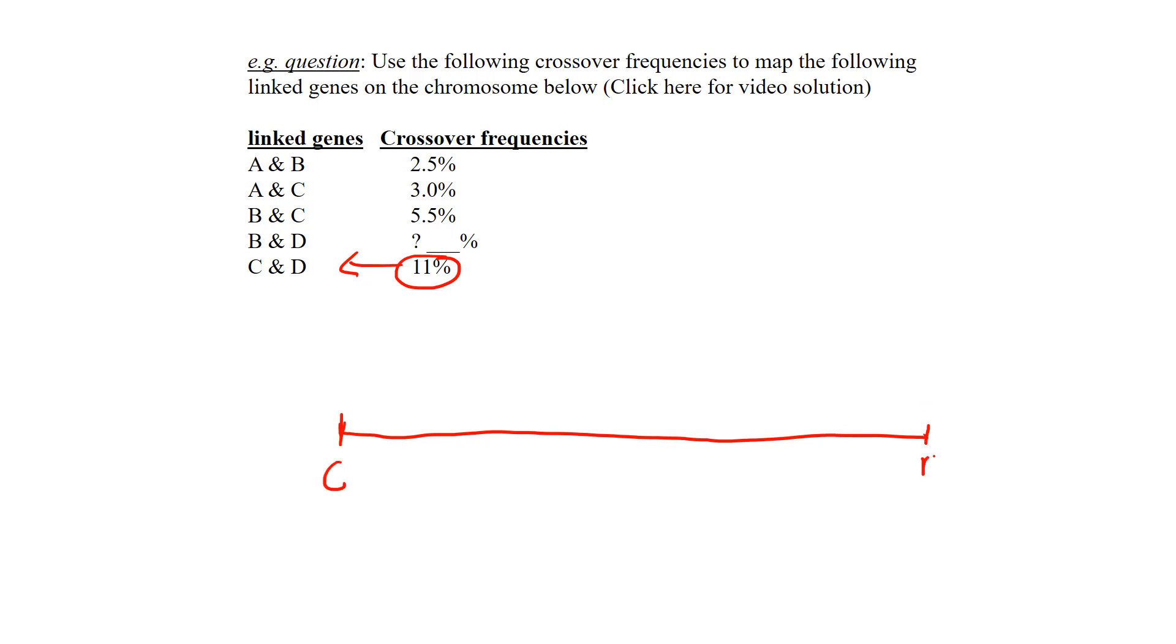Now we go find the next highest crossover frequency, and I see this one right here at 5.5 percent. That's B and C. That's pretty much splitting 11 percent right in half.